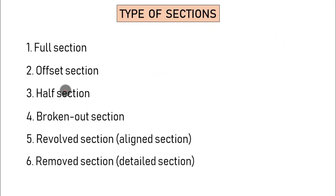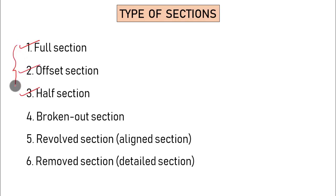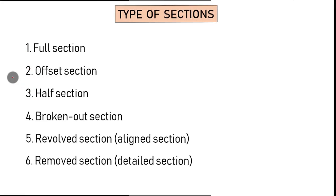The types of section views are: full section, offset section, half section, broken-out section, revolved section, and removed section. There is also an aligned section covered in the book. Full section, offset section, and half section are the most commonly used.